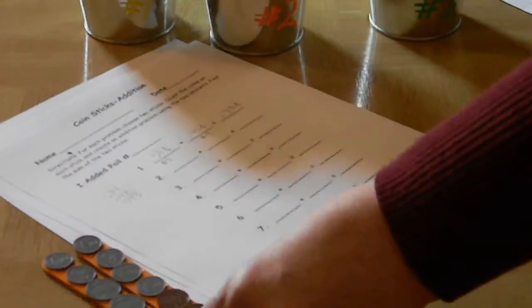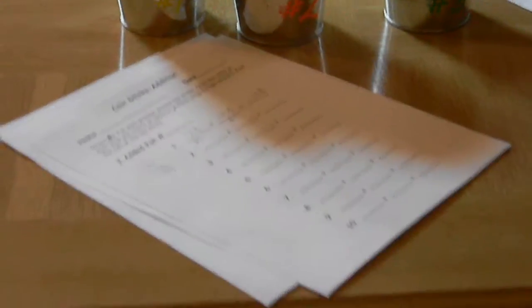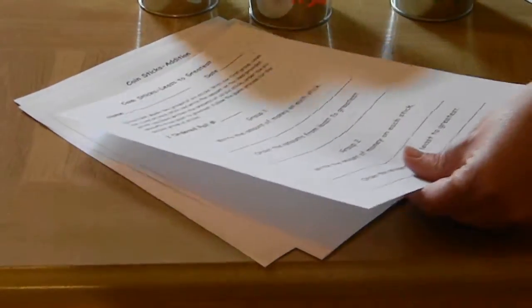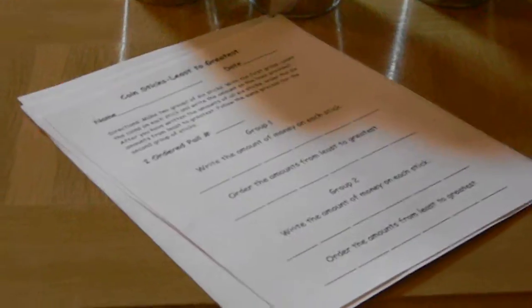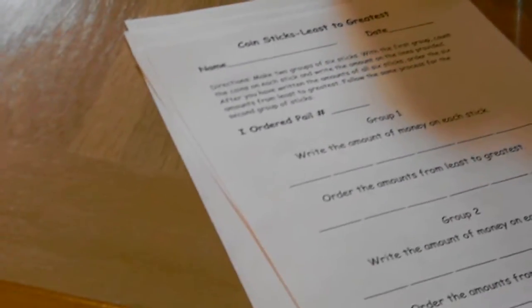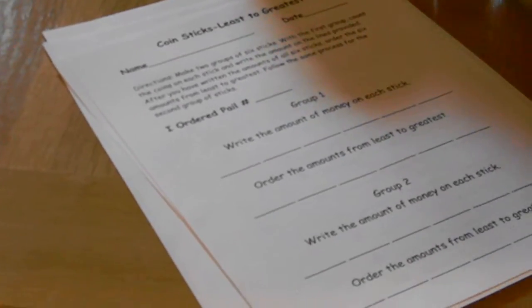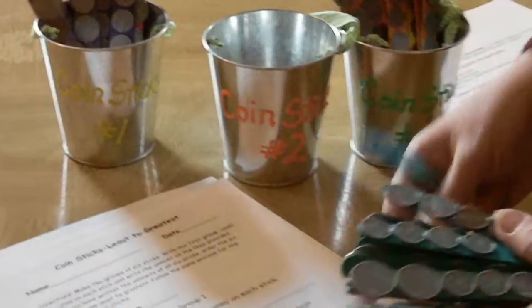And then I also did another sheet that was a least to greatest activity so in this they would like say they were going to use pail number two they would group these.